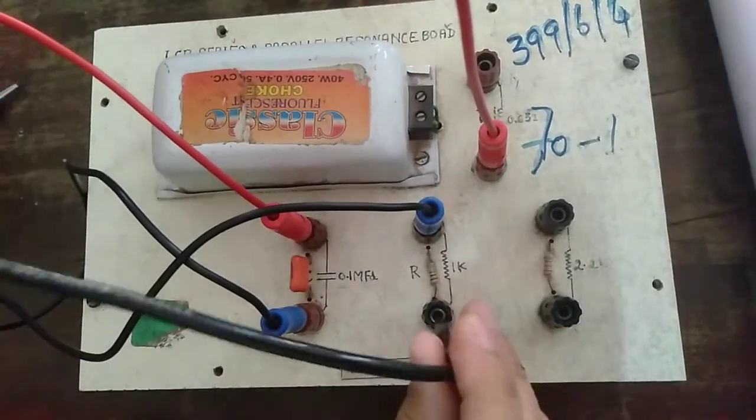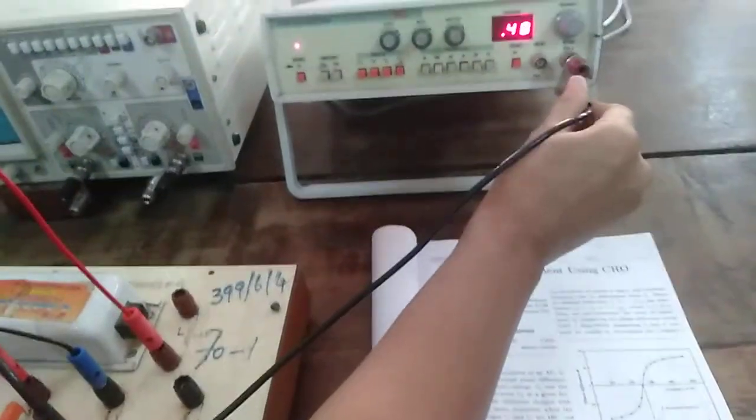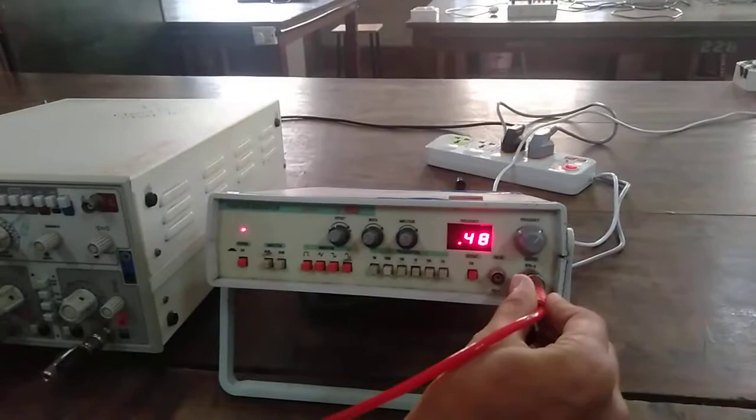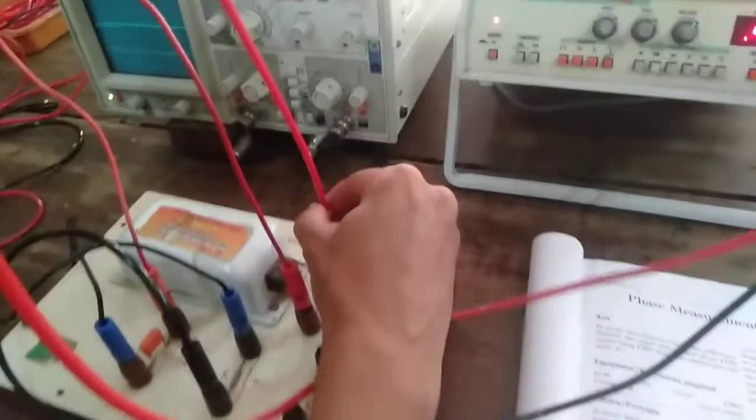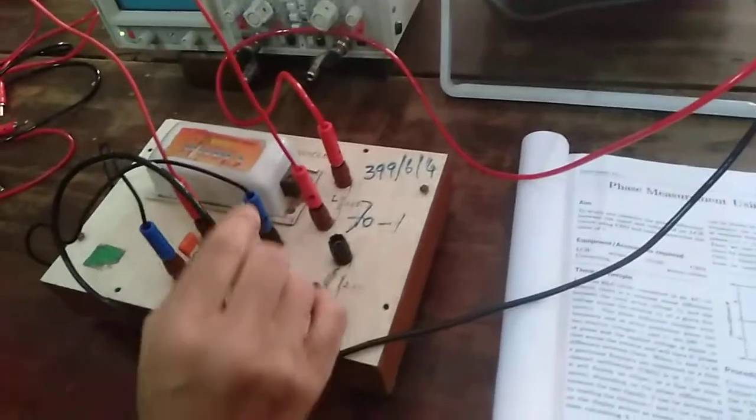Other end of R has to go to the ground of the audio oscillator. The higher potential end of the audio oscillator has to be connected across other end of L. Now, this circuit is complete.